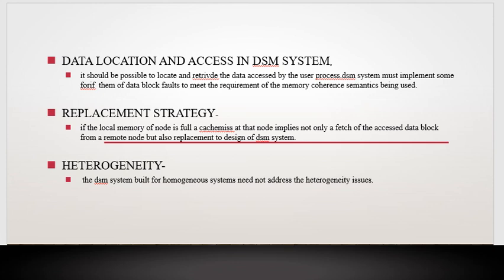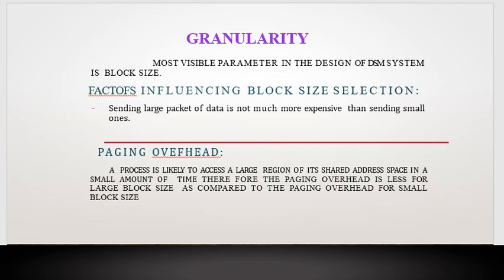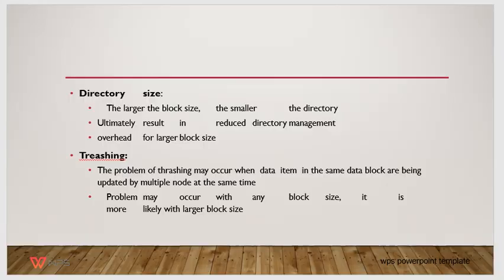In replacement strategy, we can't store all data on one system. If that data is not required for a long time, we replace it with another important piece of data. Other factors affecting granularity include directory size, tracing, and false sharing.